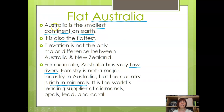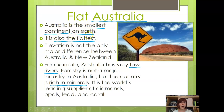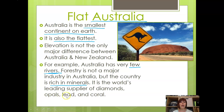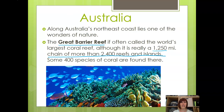Australia, on the other hand, is very flat. It is the smallest and flattest continent on Earth. Australia has very few rivers; the whole middle part, called the Outback, is very dry. Forestry is not a major industry, but the country is rich in minerals — it is the world's leading supplier of diamonds, opals, lead, and coral. Along Australia's northeast coast lies one of the wonders of nature: the Great Barrier Reef, often called the world's largest coral reef, though it's really a 1,250-mile chain of more than 2,400 reefs and islands. Some 400 species of coral are found there.